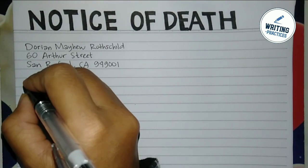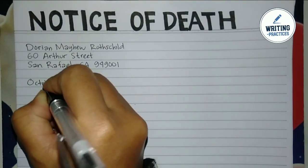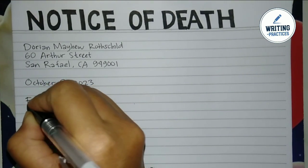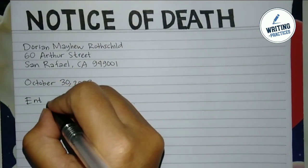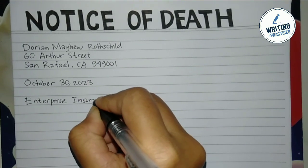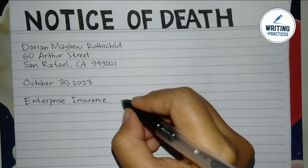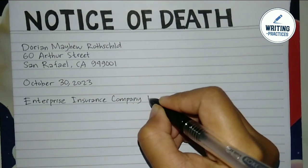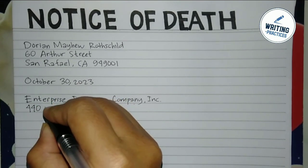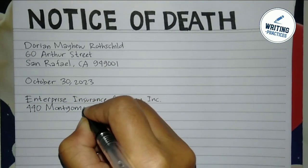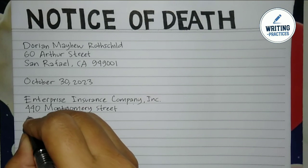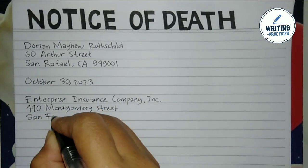After that, write the date of the letter using the format of month, date, and year. In this case, this is October 30th, 2023. Next, write the recipient's information. You can write the full name of the recipient, but if you have no idea, just write the company name. In this example, the writer is addressing Enterprise Insurance Company Inc. Under the company name, write the address of the office, mentioning the number, street name, city, state, and zip code.